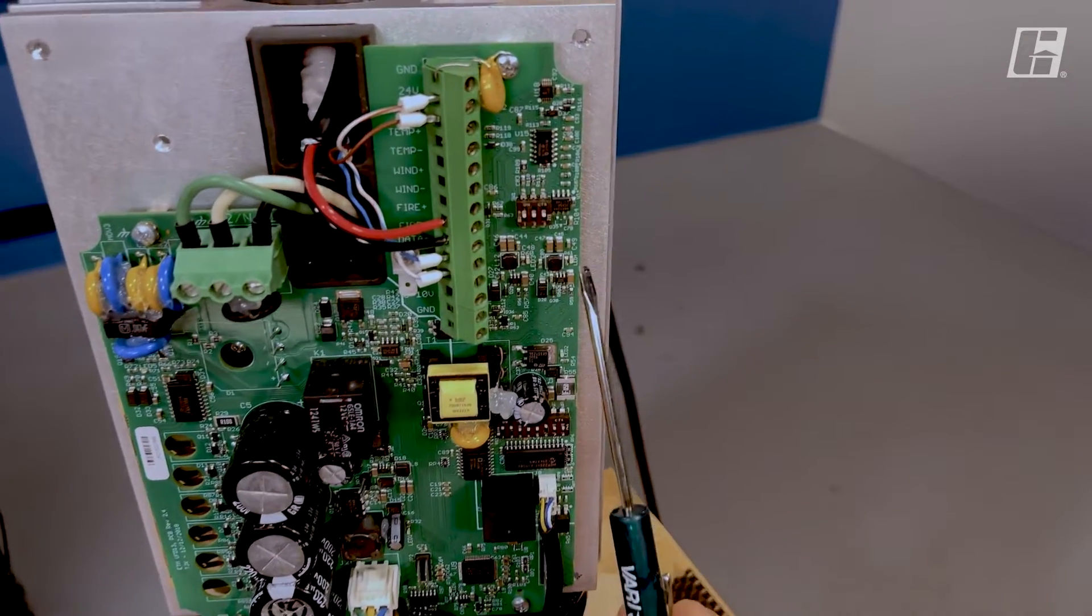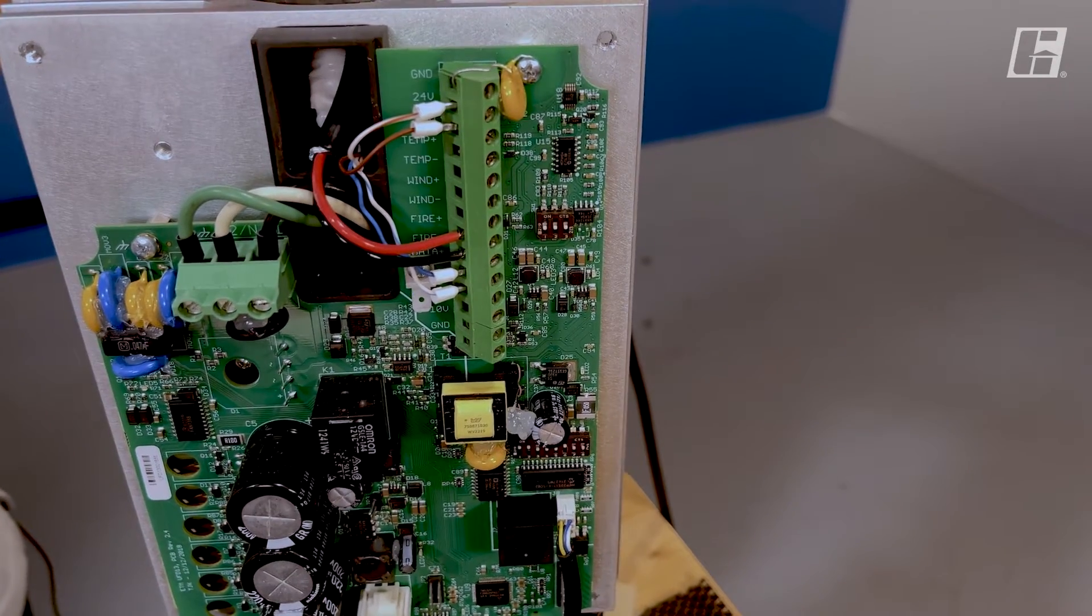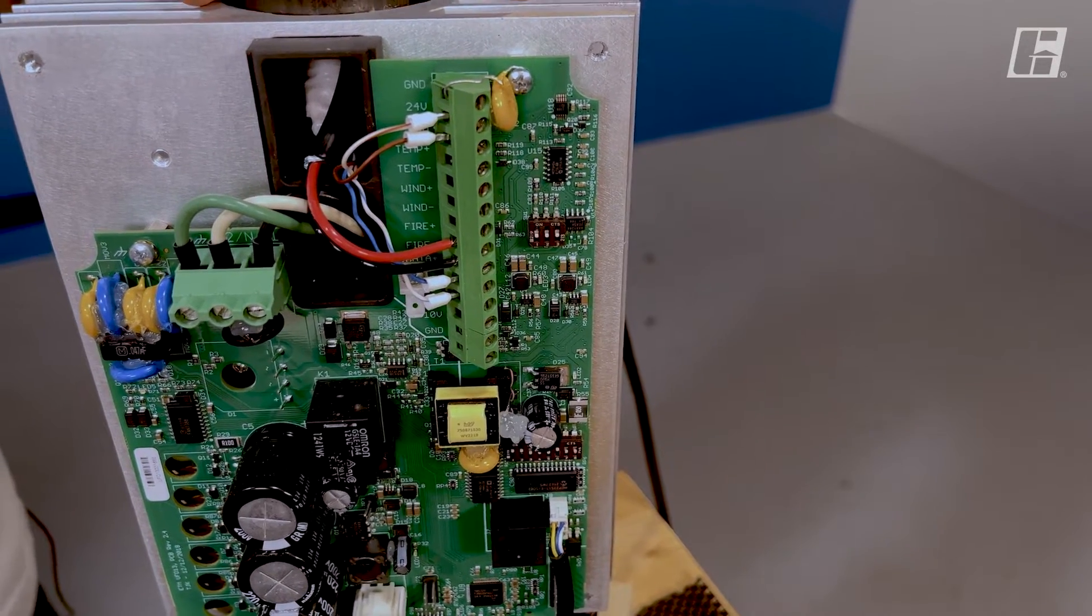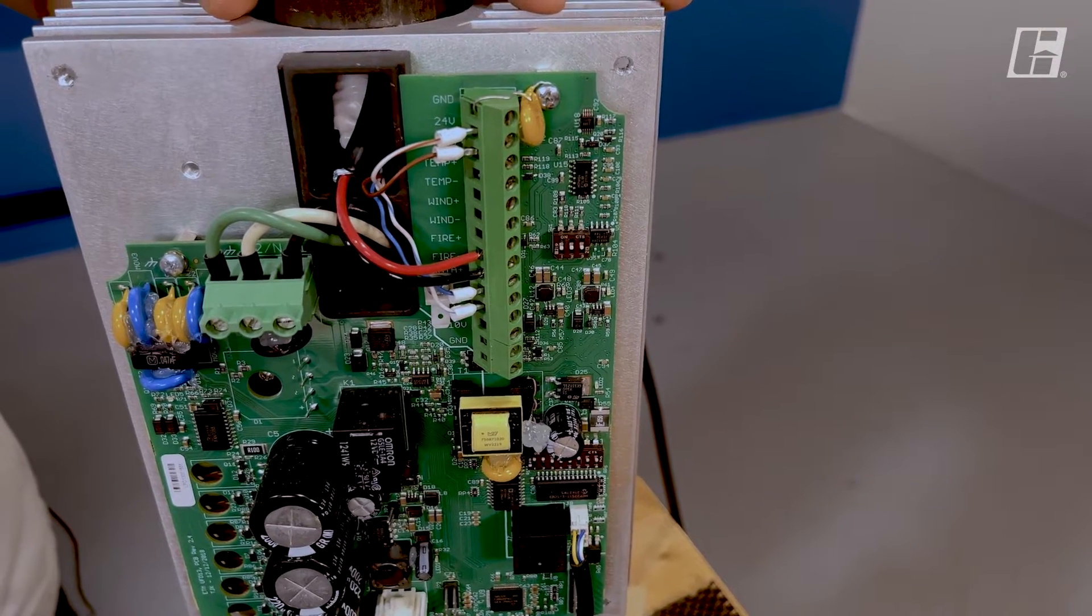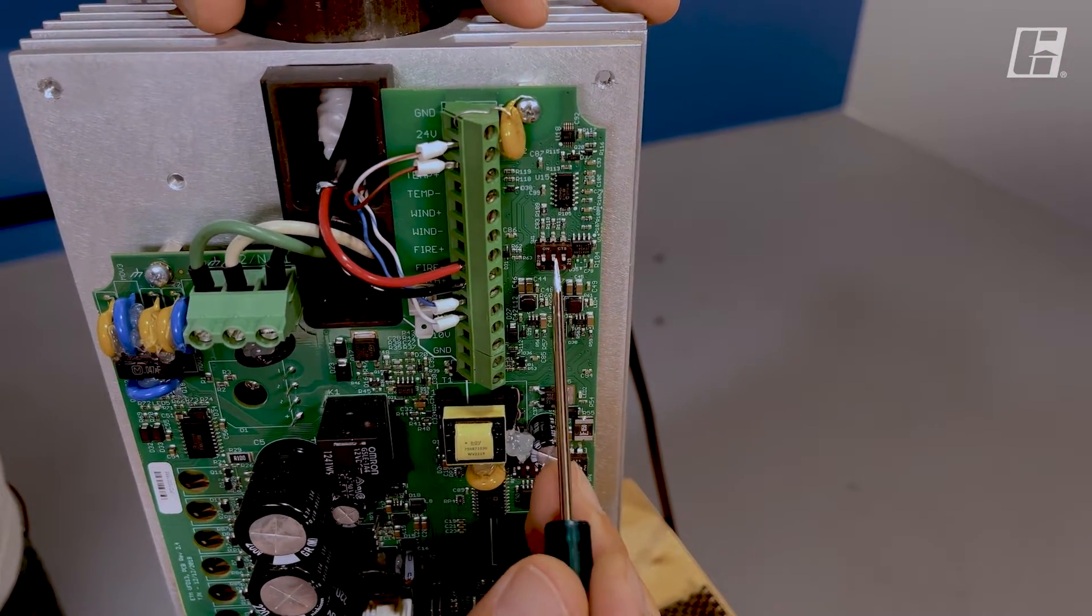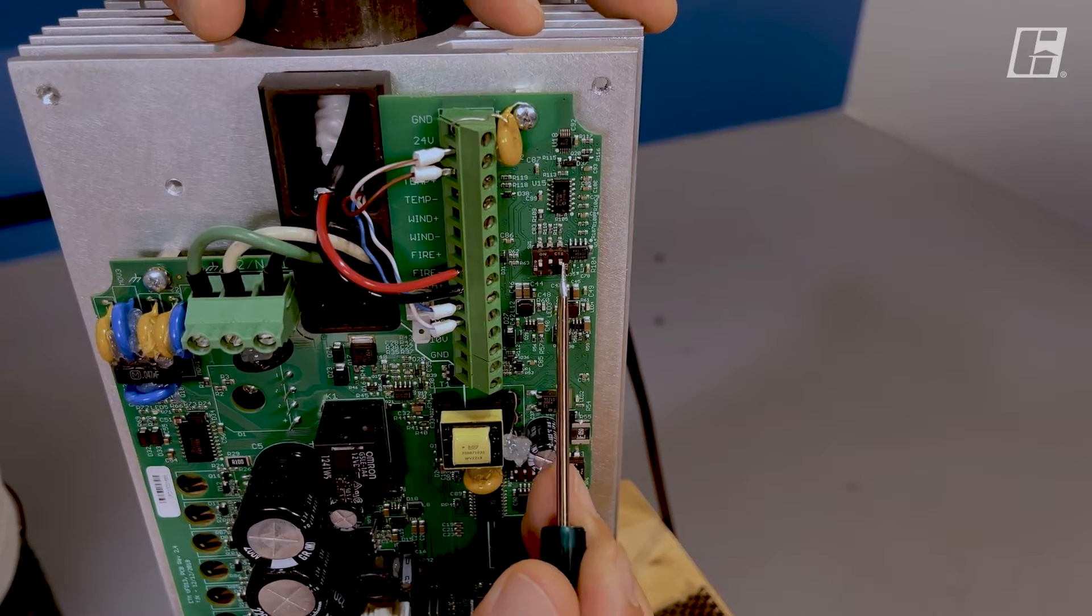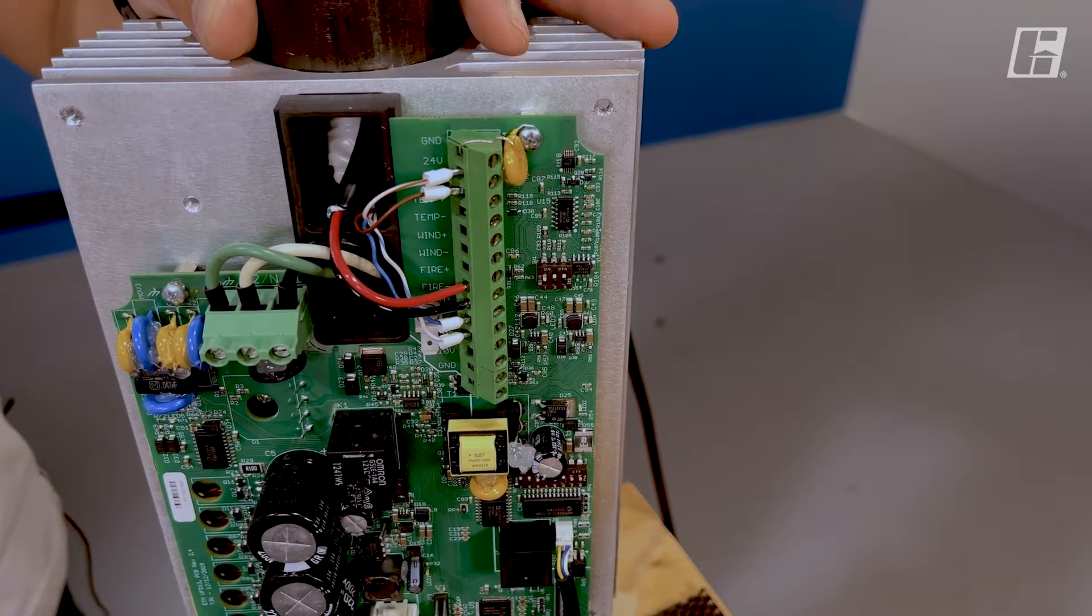We have a dip switch which sets up the communication biasing. This will either be set to down, up, up for the first fan in the series, or down, down, down for all additional fans. To set this for the first fan in the series, again, down, up, up.